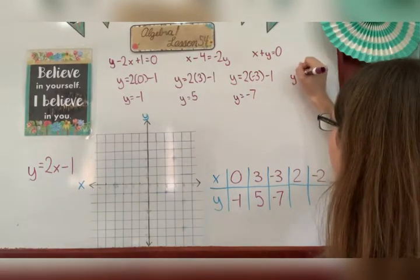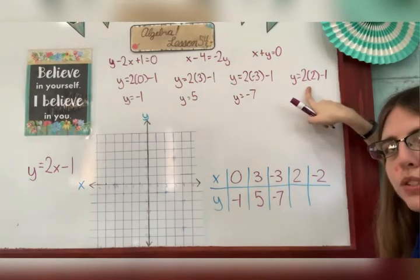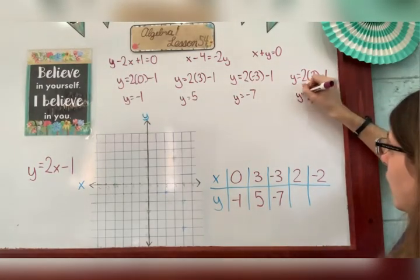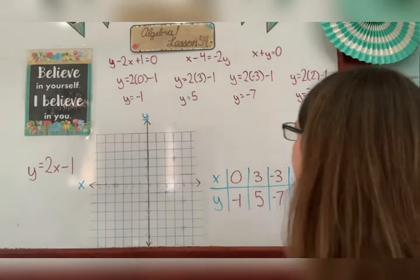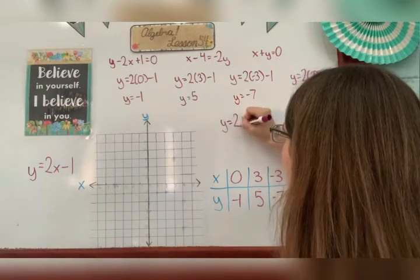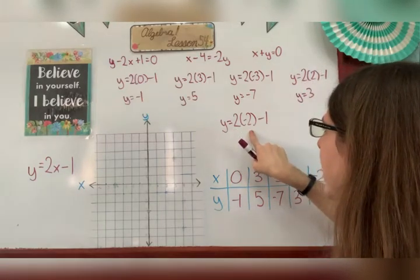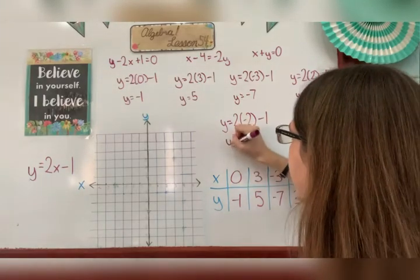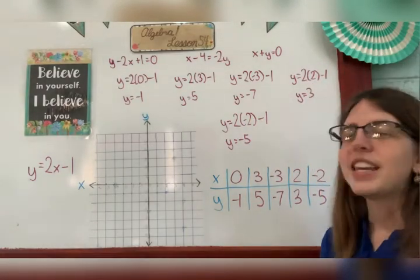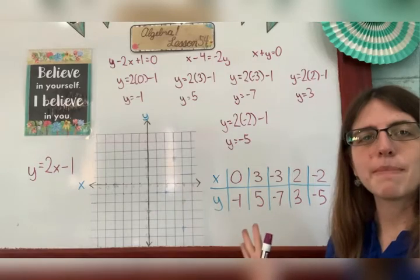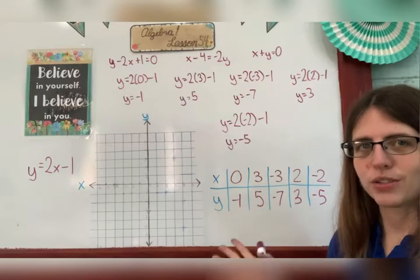For x equals 2: y equals 2 times 2 minus 1, which is 4 minus 1, so y equals 3. And for x equals negative 2: y equals 2 times negative 2 minus 1, which is negative 4 minus 1, so y equals negative 5. This should come out in the shape of a line. If it's not a line, that means we did something incorrect somewhere, so it's kind of a mental check.